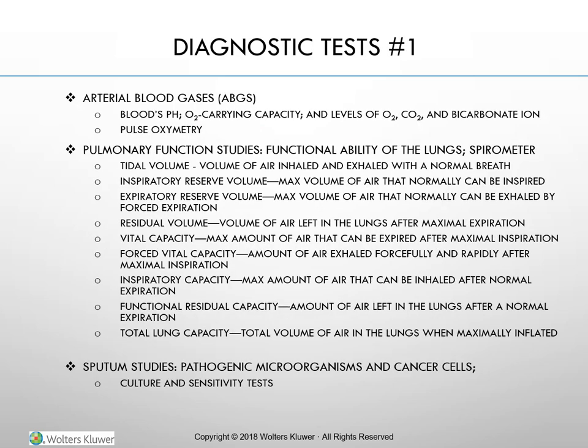Diagnostic tests — Arterial Blood Gases (ABGs): Oxygenation of body tissues depends on the amount of oxygen in the arterial blood. ABGs determine the blood's pH, oxygen carrying capacity, levels of oxygen, CO2, and bicarbonate. Blood gas samples are obtained through an arterial puncture at the radial, brachial, or femoral artery, or from an indwelling arterial catheter. If arterial blood cannot be obtained, a mixed venous sample is used. ABGs are frequently ordered when a client is acutely ill or has a history of respiratory disorders.